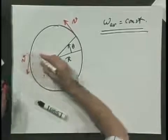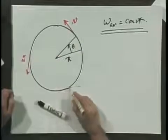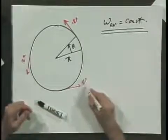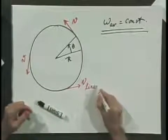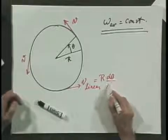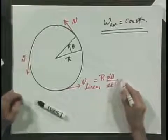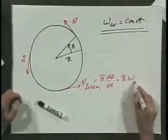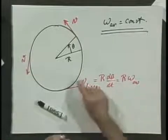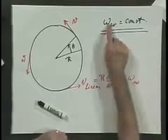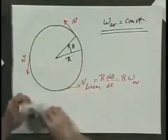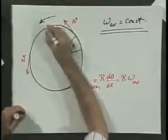The linear velocity in magnitude is the same everywhere on the circle, though not in direction. The linear velocity equals r times dθ/dt, which is r times the angular velocity. You can see that the magnitude is constant everywhere, because the angular velocity dθ/dt is constant — this object rotates with a constant angular velocity.